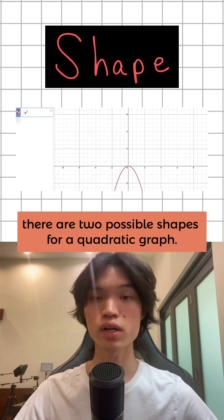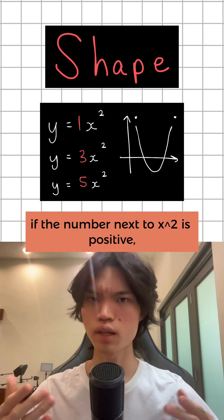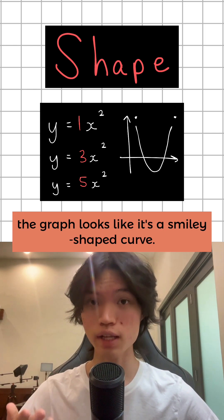S stands for shape. There are two possible shapes for a quadratic graph. If the number next to x² is positive, the graph looks like a smiley-shaped curve.